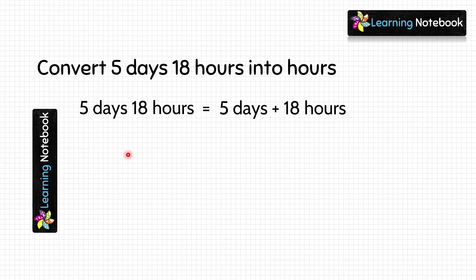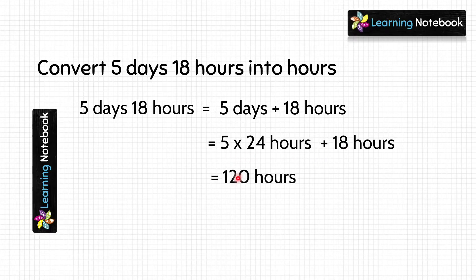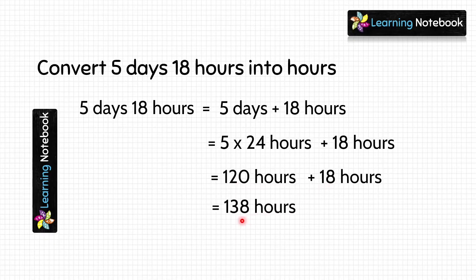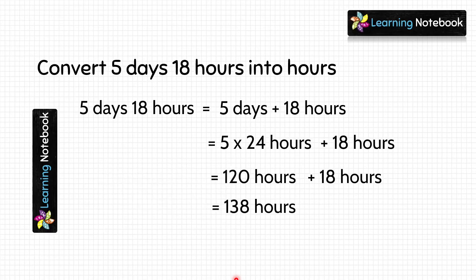We know one day equals 24 hours, so 5 days would be equal to 5 multiplied by 24 hours, and we will add 18 hours to this. 5 into 24 is 120, so we do 120 plus 18 hours, which equals 138 hours. In this way we have converted 5 days 18 hours into 138 hours.